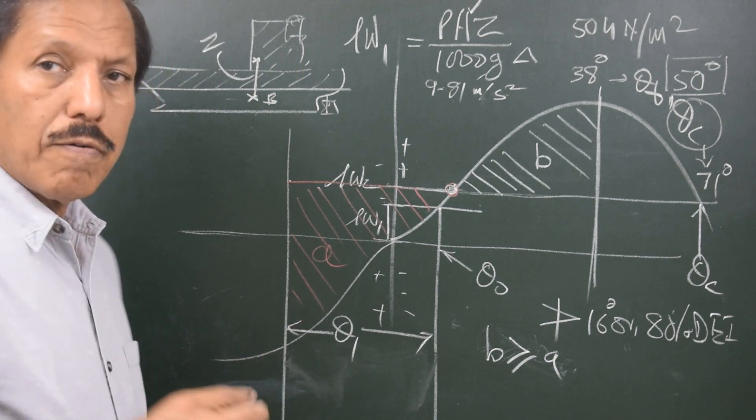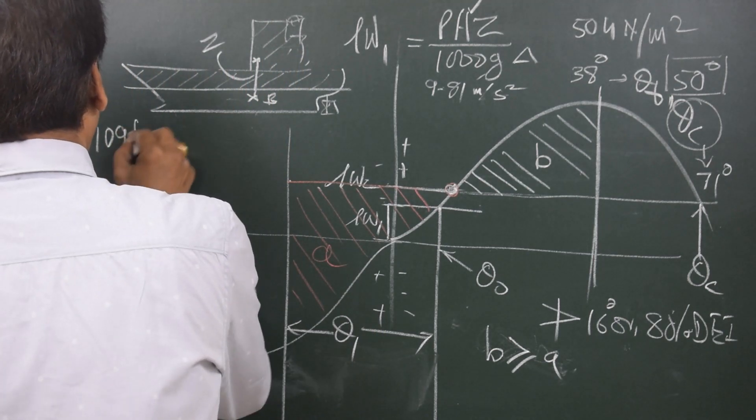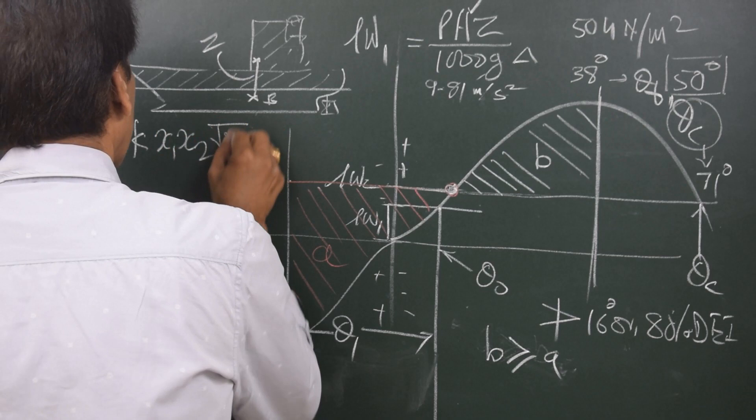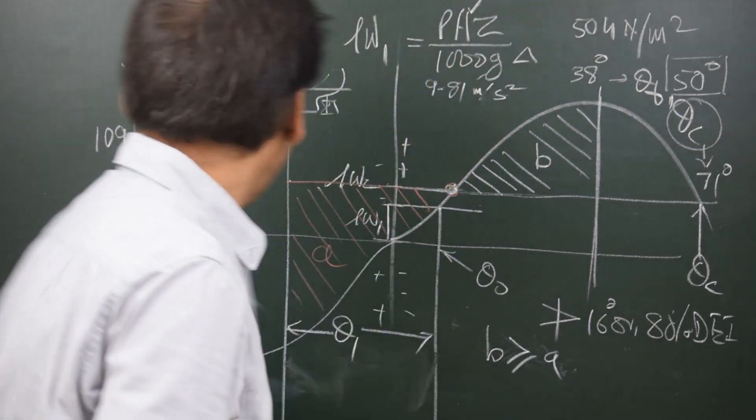Now talking about theta 1, how do we find theta 1? So formula for theta 1 is 109 K X1 X2 under root RS. So how do we find these values?